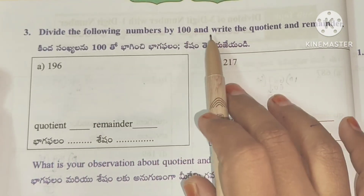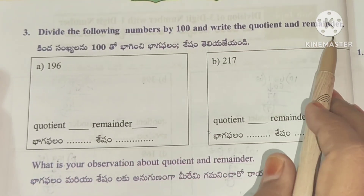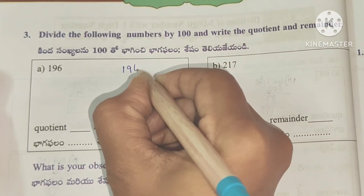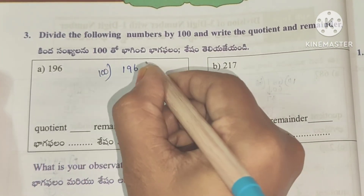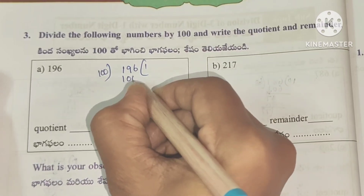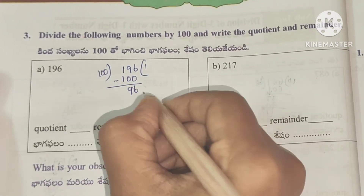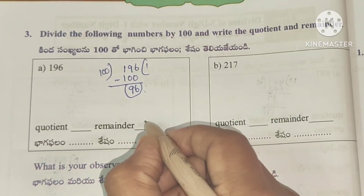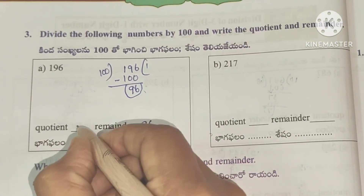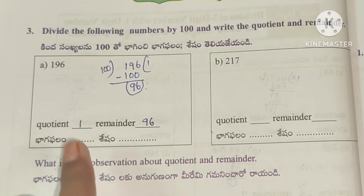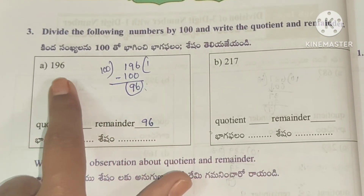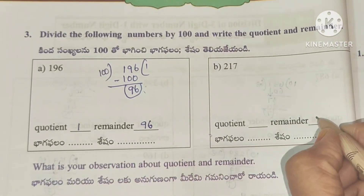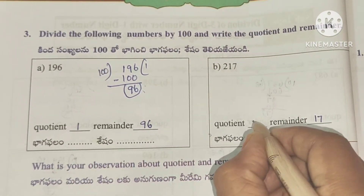Third problem: divide the following numbers by 100 and write the quotient and remainder. For example 196 divided by 100: 100 times 1 is 100, subtraction gives 96, so remainder is 96 and quotient is 1. Next 217 divided by 100: the last two numbers are the remainder, so remainder is 17 and quotient is 2.